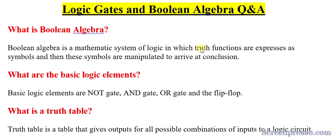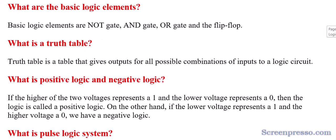What is a truth table? Boolean algebra involves truth functions, which are implemented using truth tables. A truth table is a table that gives the output for all possible combinations of inputs to a logic circuit. For example, if you want a bulb to glow only when both switch one and switch two are on, you implement AND logic in a truth table.